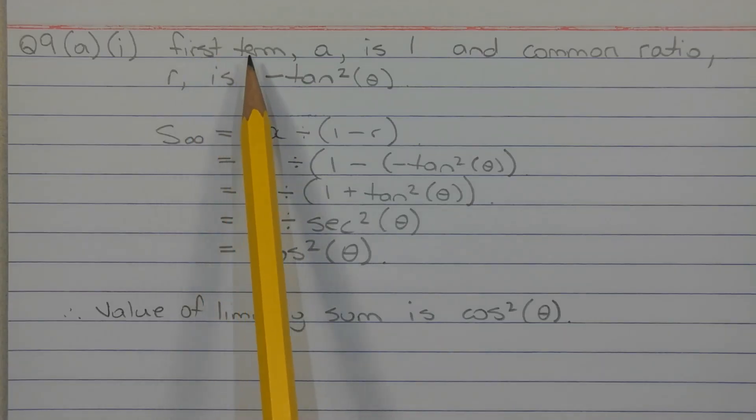The first term of the geometric progression, A, is 1 and the common ratio, R, is negative tan squared theta.